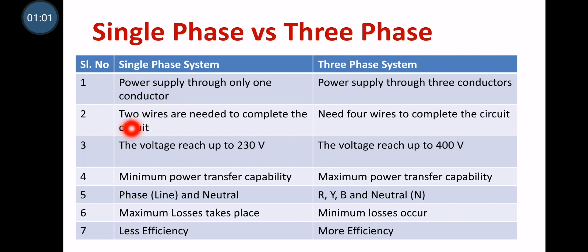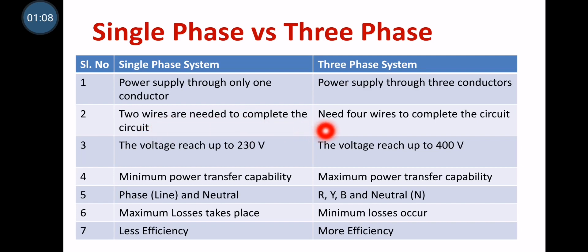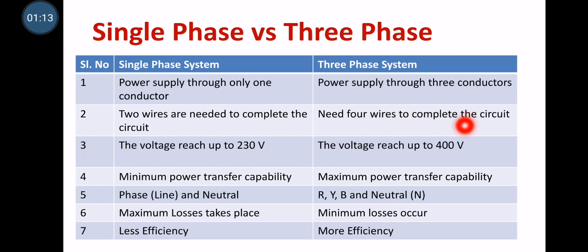Moving on to the second point. Two wires are needed for completion of the circuit in case of single-phase system. But in case of three-phase system, we require four wires, especially in case of star connection, for completion of the circuit. For delta connection, three wires are enough.